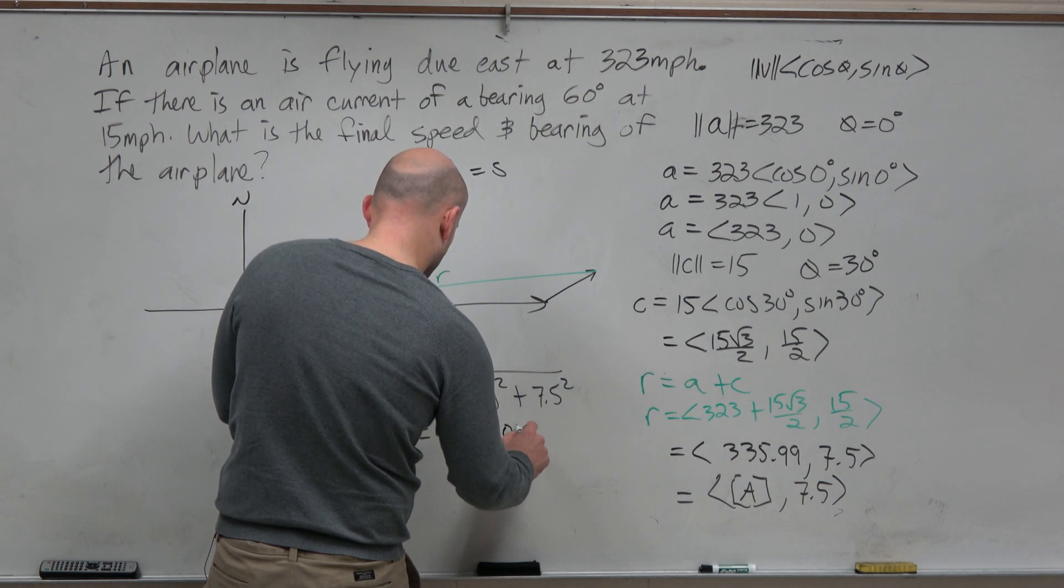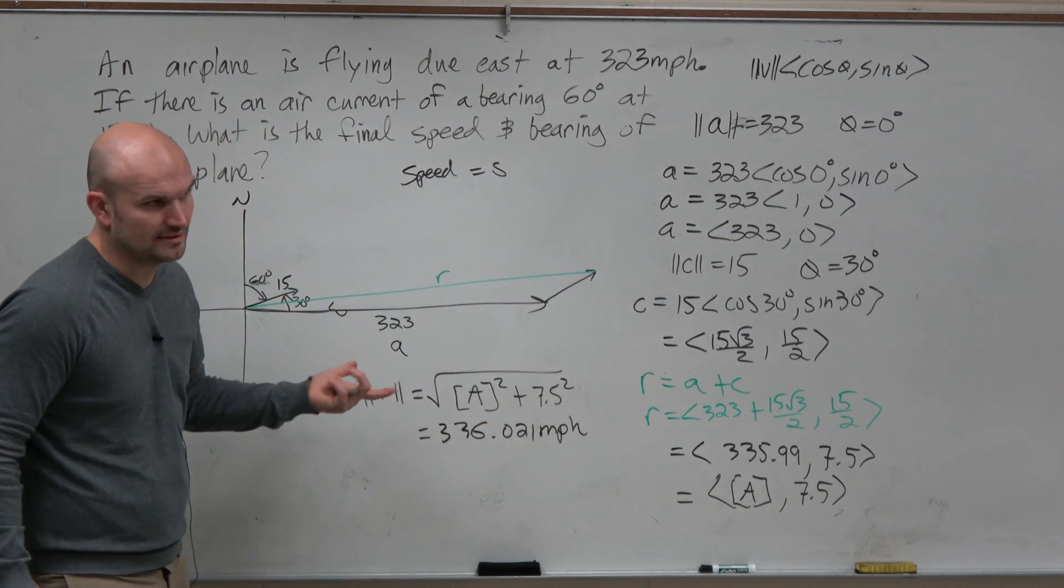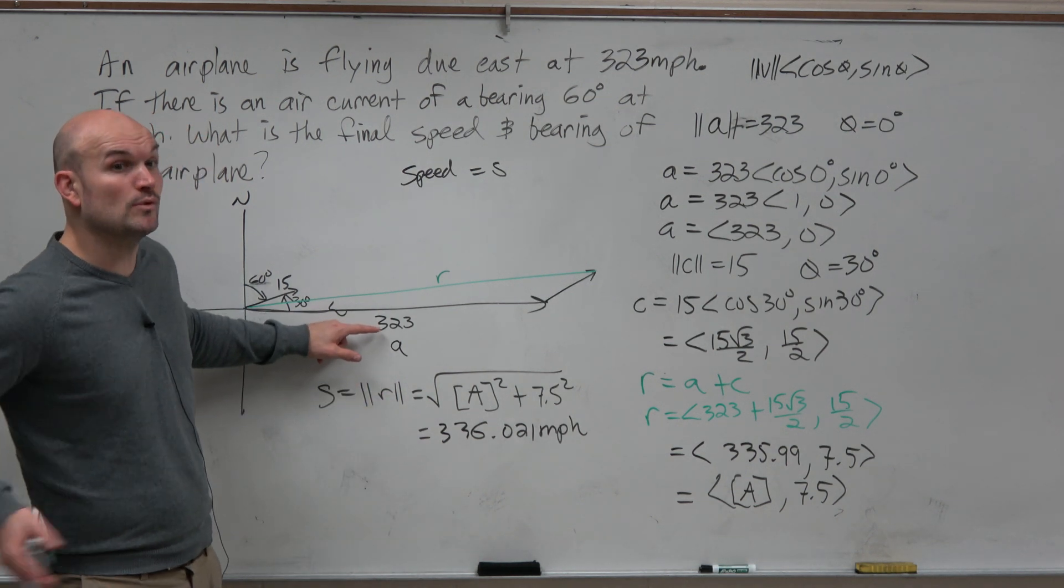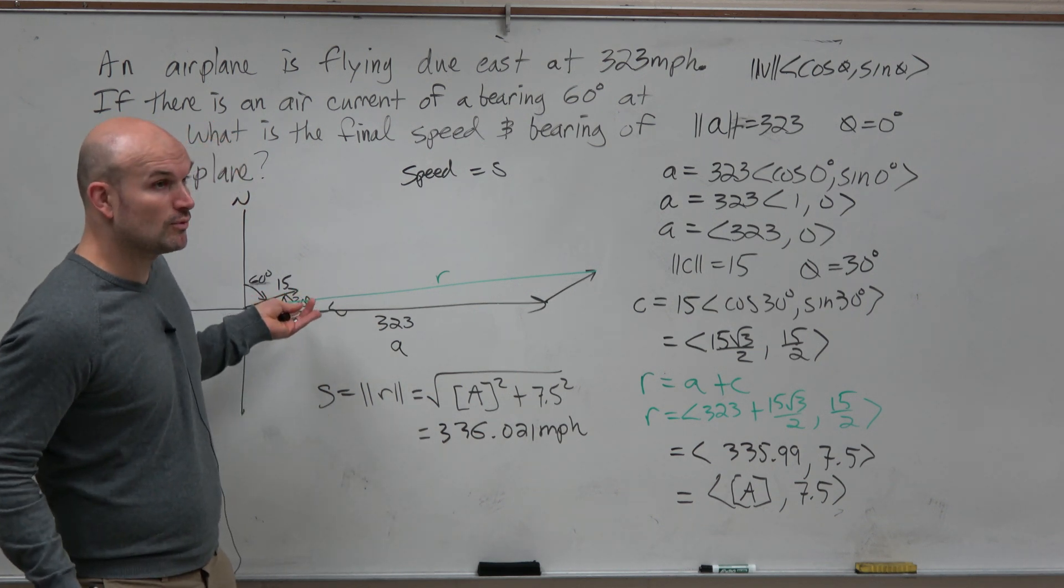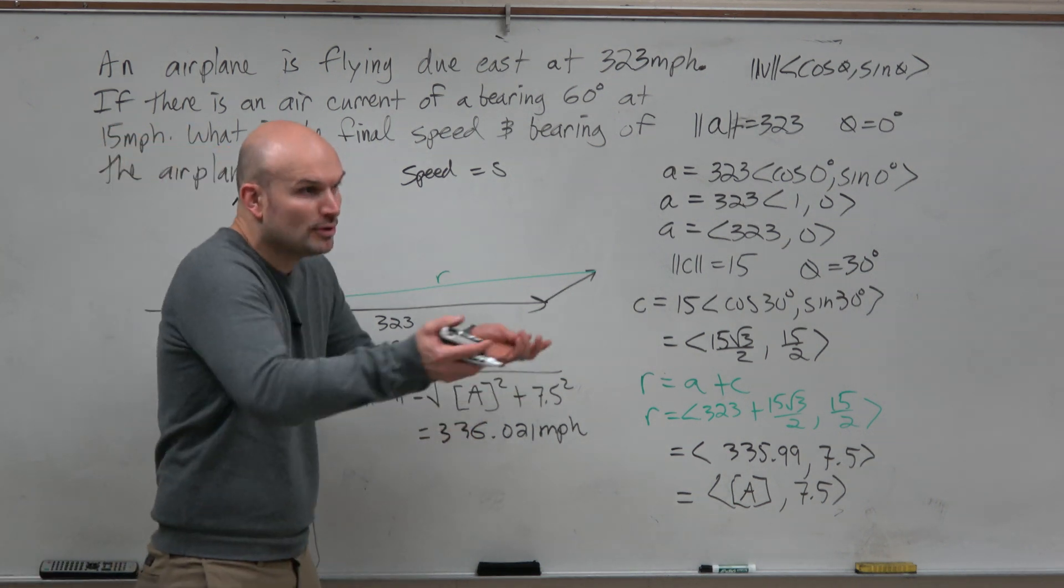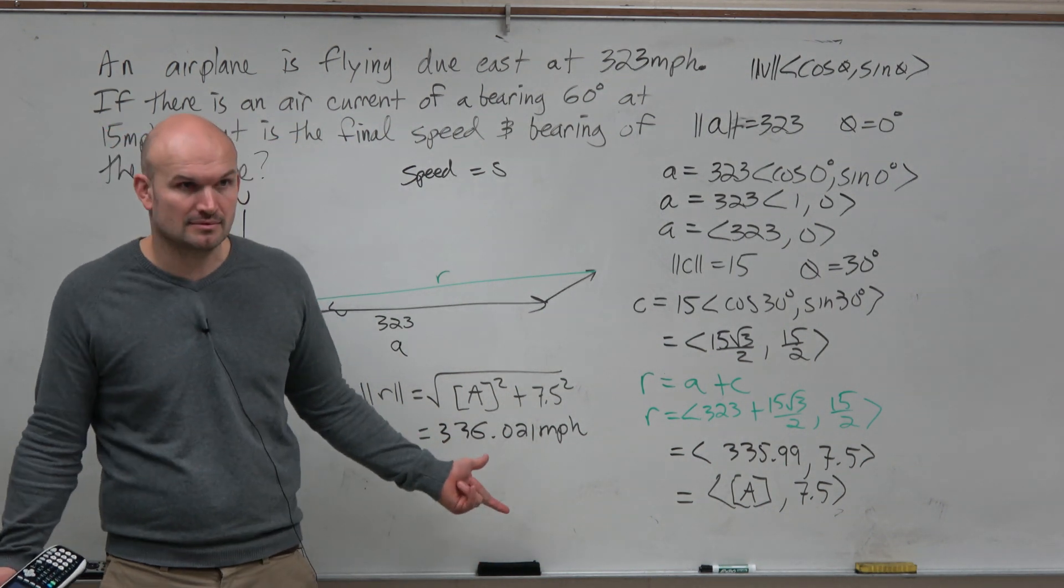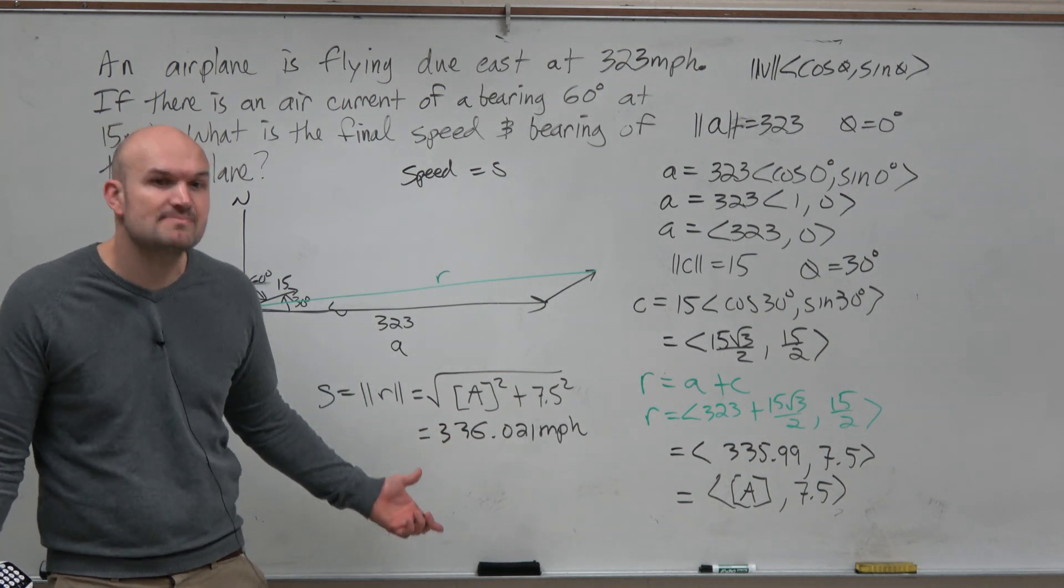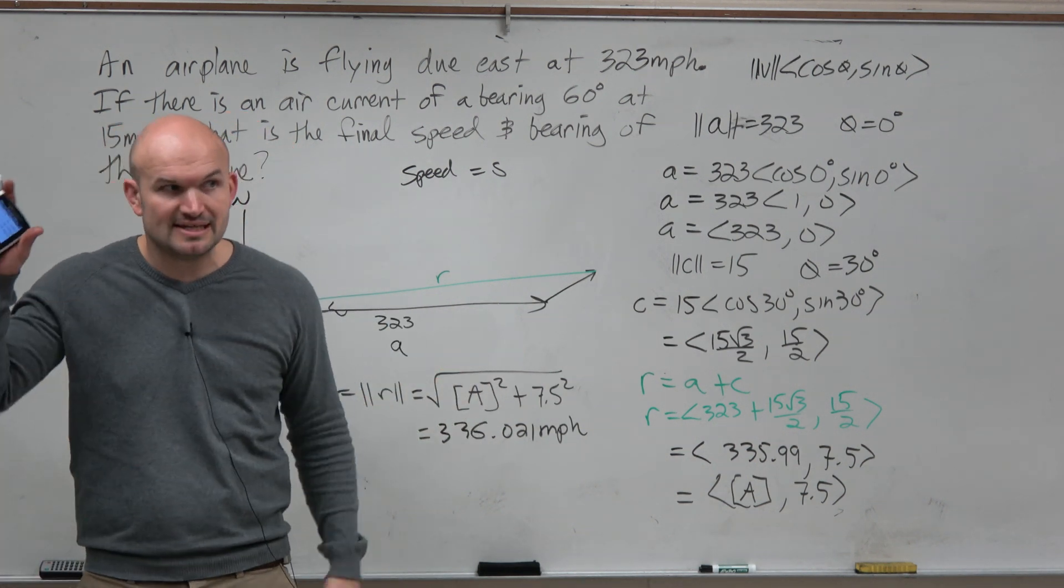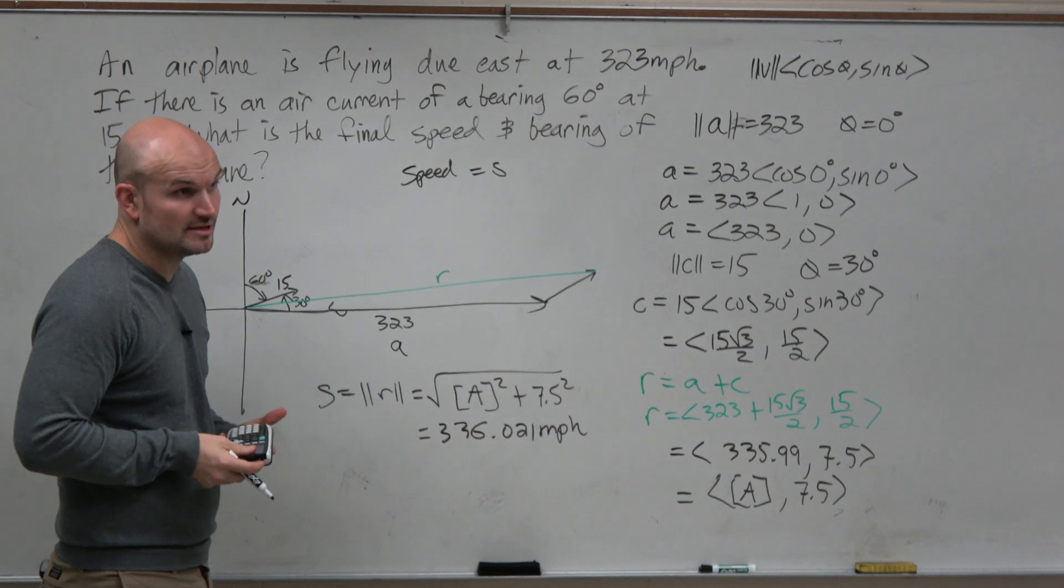S equals the magnitude of R, which is now going to equal square root of A quantity squared plus 7.5 squared. So we're going to do square root of alpha A squared plus 7.5 squared. And you should get 336. Let's make sure this makes sense. You're traveling 323 miles per hour. You have wind at your back, 15 mile per hour wind at your back, but not completely. So you're going faster. You're not going 15 miles per hour faster because it's not like all pushing you. But does that make sense in the context of the problem? Yes. What happens if you get like 3,000 or 3? You probably typed in something wrong. So don't submit that. Realize, my answer doesn't make sense. Let me go back and recheck that. So that's going to be our speed.